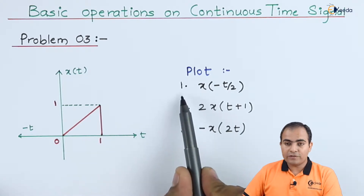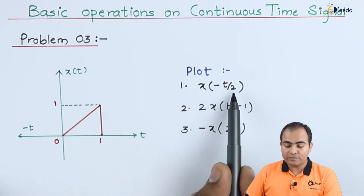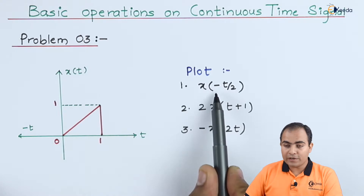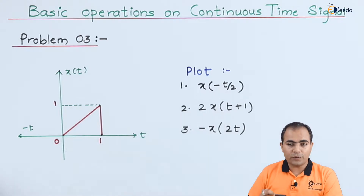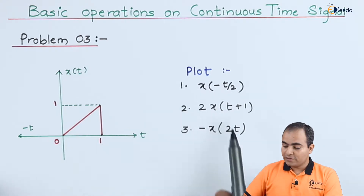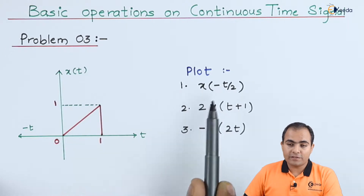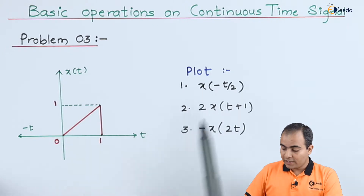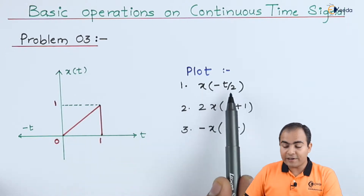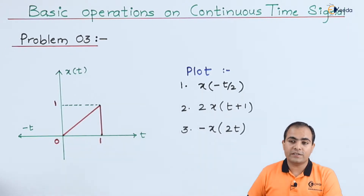Find out first of all x of minus t by 2. Here we are going to use two properties. As the minus sign is mentioned, we are going to use time reversal property, and t is divided by 2 which means we will use time scaling property.